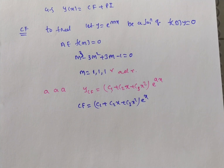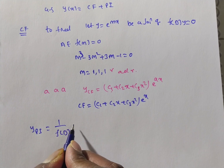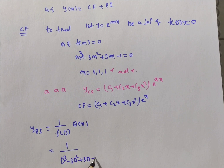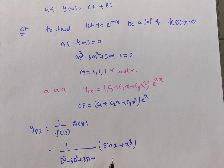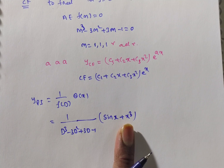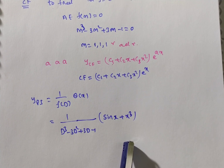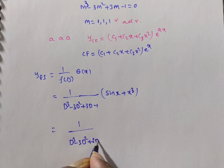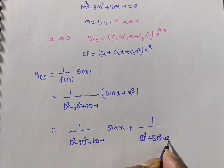Now we find the particular integral. For f(D)·y = Q(x), PI = [1/f(D)]·Q(x), which is 1/(D³ - 3D² + 3D - 1) · (sin x + x³). Since Q(x) is a sum of two terms — a sine function and a polynomial — we separate them: PI = PI₁ + PI₂.